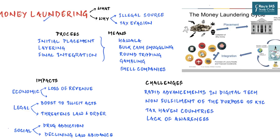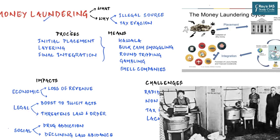The word 'laundering' comes from the infamous gangster Al Capone's practice of using a chain of laundromats he owned to launder huge amounts of cash, and from there the term 'money laundering' was derived.